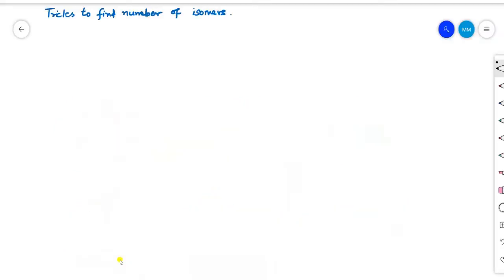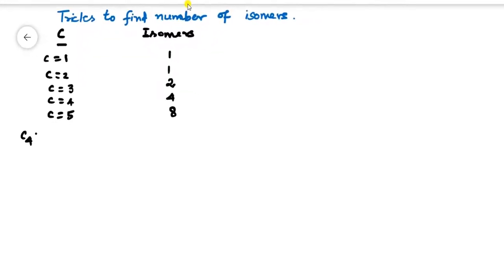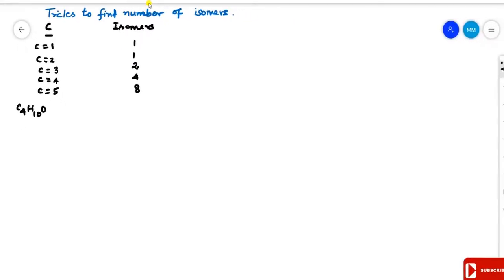Before finding the number of isomers for a molecular formula, we have to remember the relationship between the number of carbons and the number of isomers. If the carbon number is 1, the number of isomers is 1. Carbon number 2, isomers 1. Carbon number 3, isomers 2. Carbon number 4, isomers 4. Carbon number 5, the number of isomers is 8.